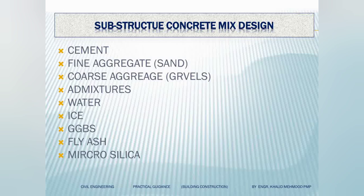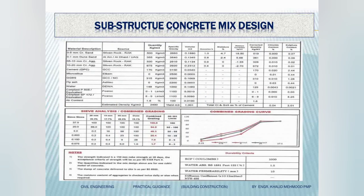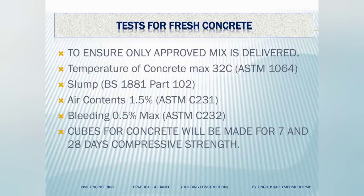Sub-structural concrete mix design uses cement, fine aggregate, coarse aggregate, admixture, water, etc. This is a copy of the mix design. It tells you all the ingredients used in the concrete, the type of concrete, and the different percentages of the materials.